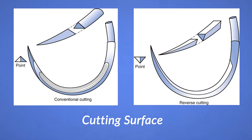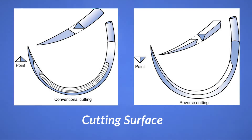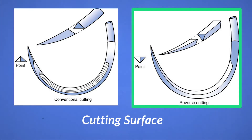Lastly, the cutting surface of a needle refers to the cross-sectional shape of the point of the needle itself. Typically, a cutting needle has a cross-section shape of a triangle where the apex of the triangle points to the inner curvature of the needle. A better design is a reverse cutting needle where the apex of the triangle points to the outer curvature of the needle. The advantage to this is that it will create less wound laceration risk compared to the conventional cutting surface.